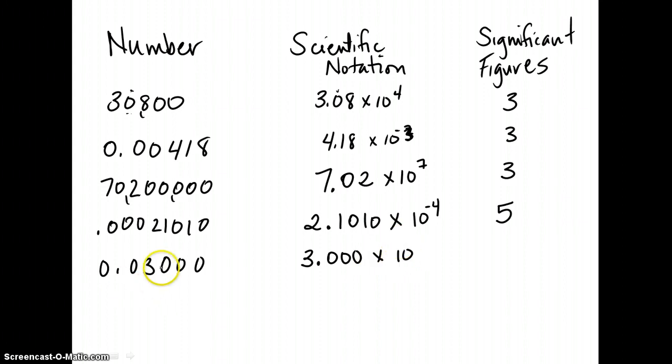And so in this case, it's to the negative 2. I have four significant figures. So let's try one more. Let's try something like 700.01.